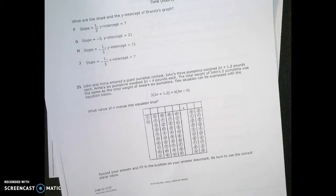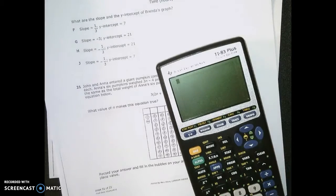Now I'm looking at question 21 on my screen. You see 3(2n + 1.2) = 6(3n - 4). You can solve that using distributive property and solve for n. I can also use my calculator.